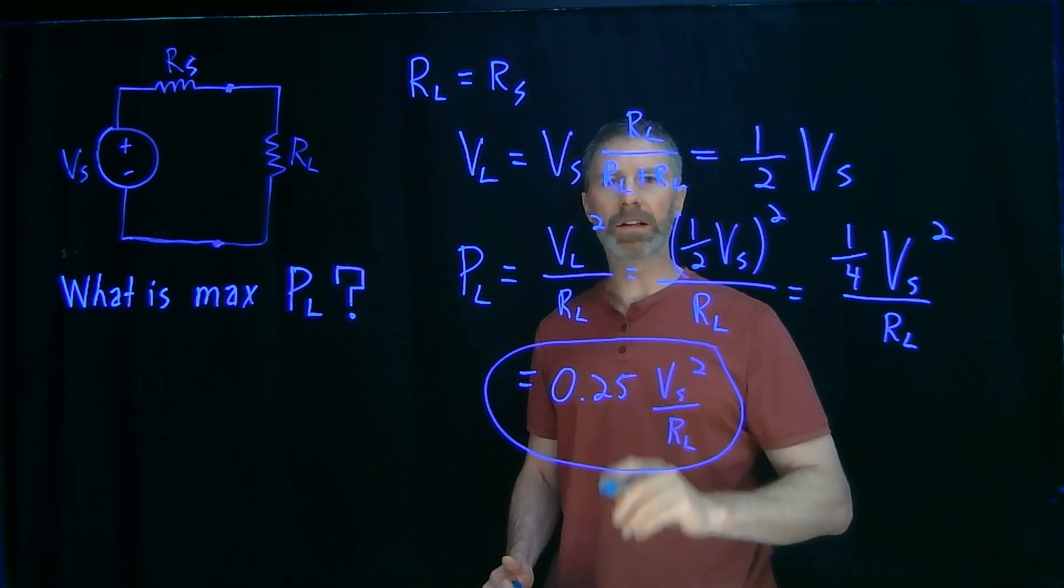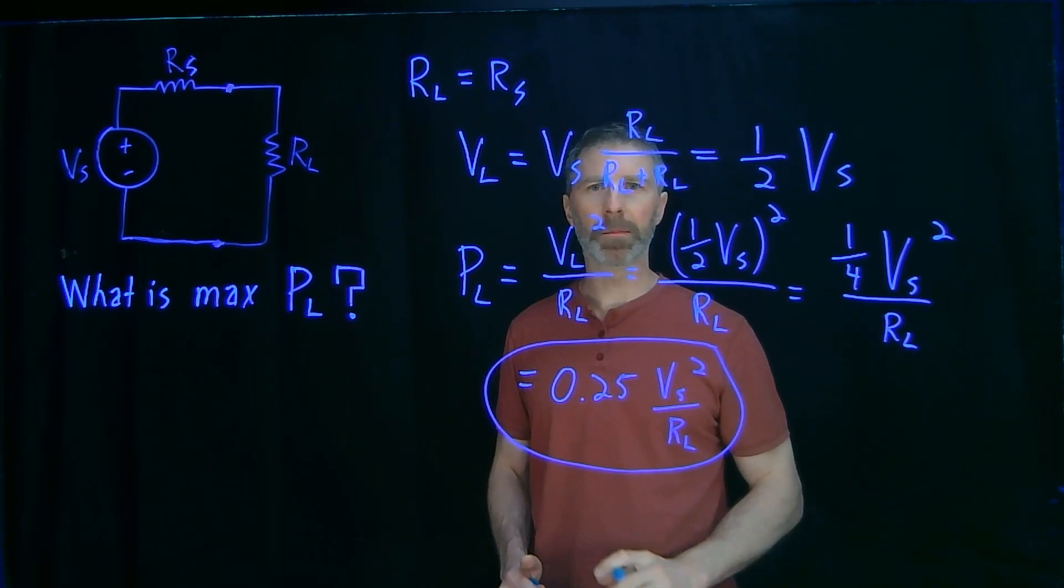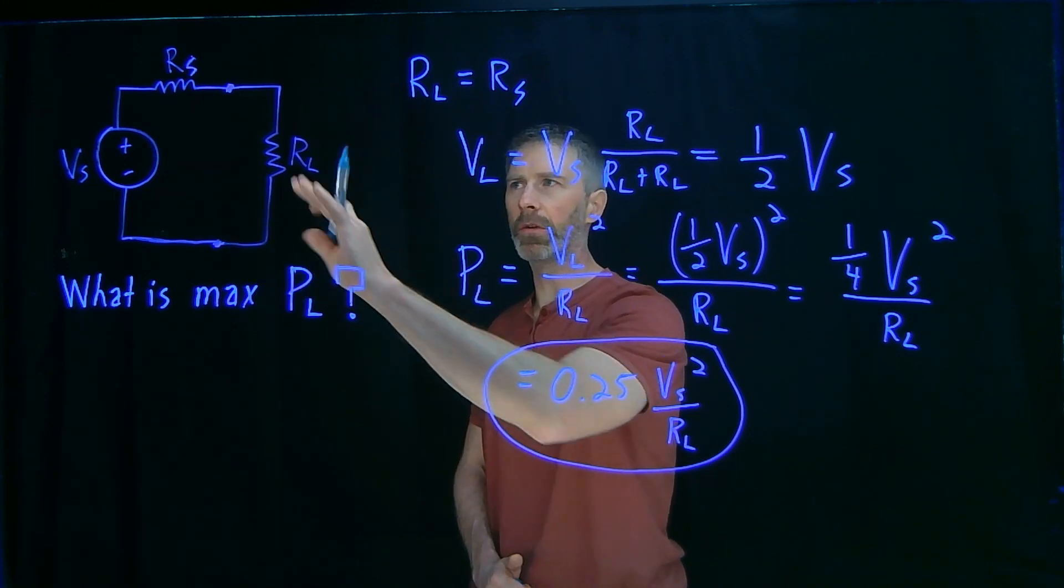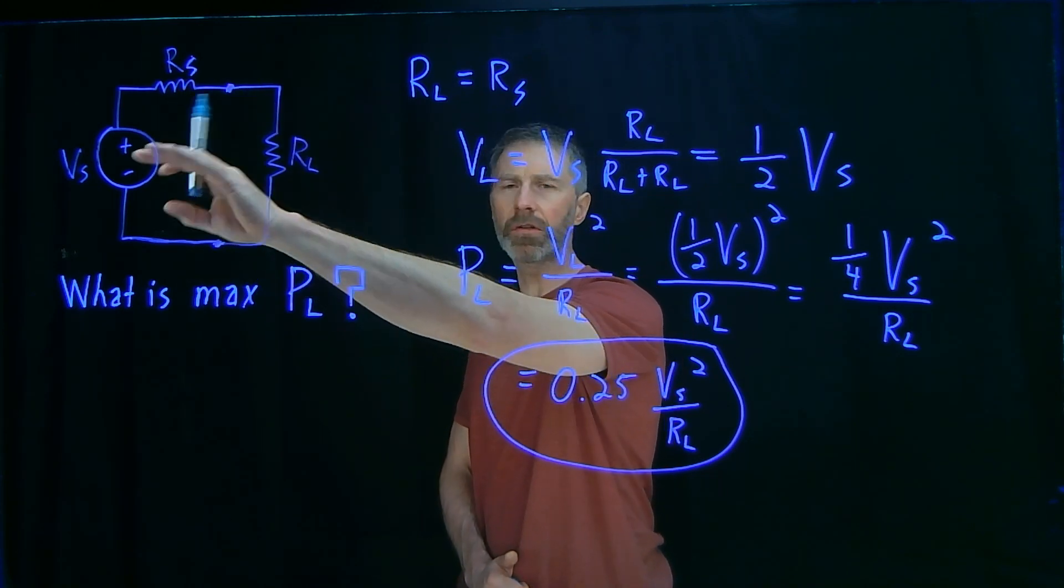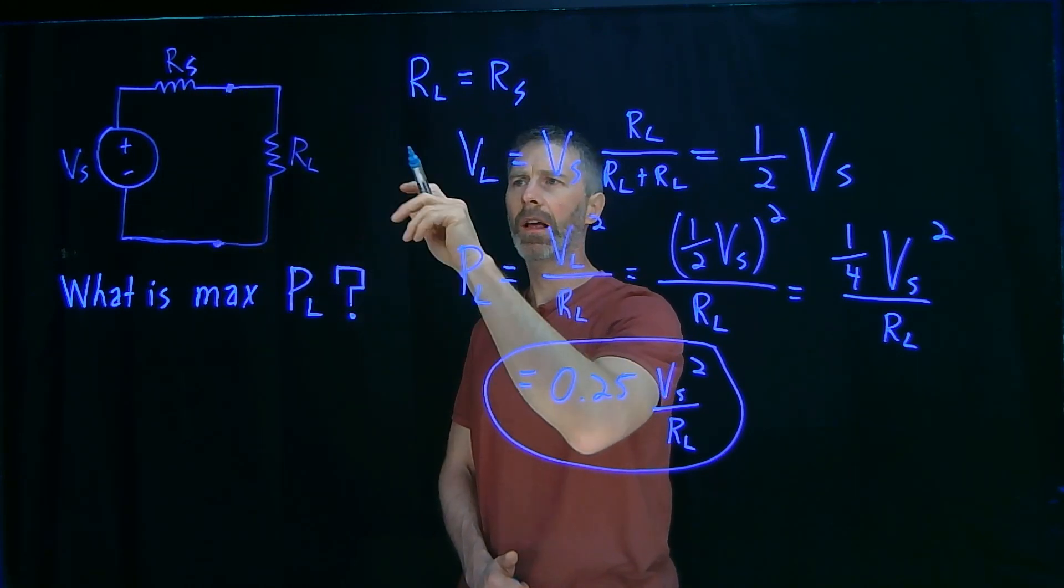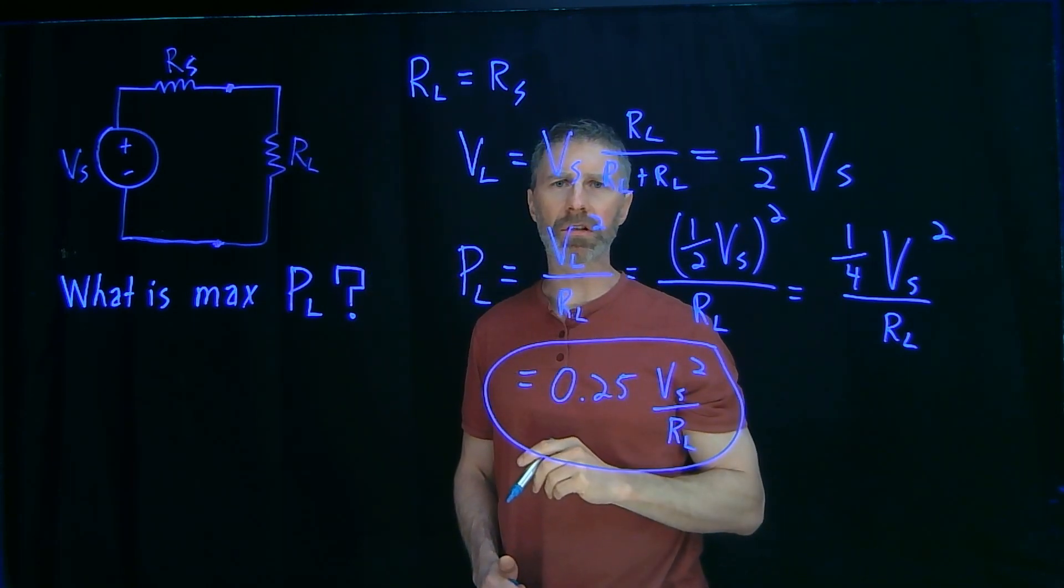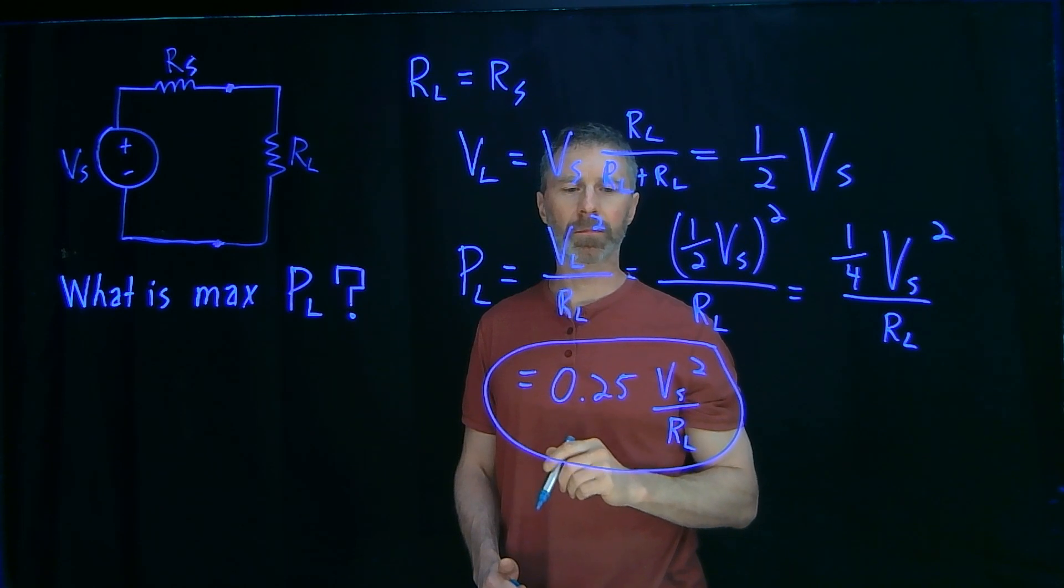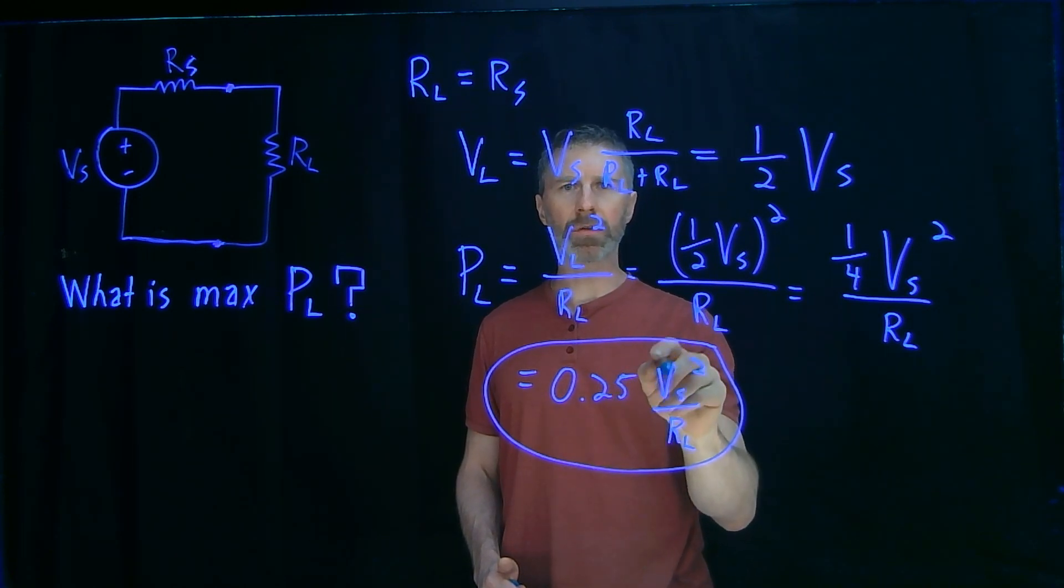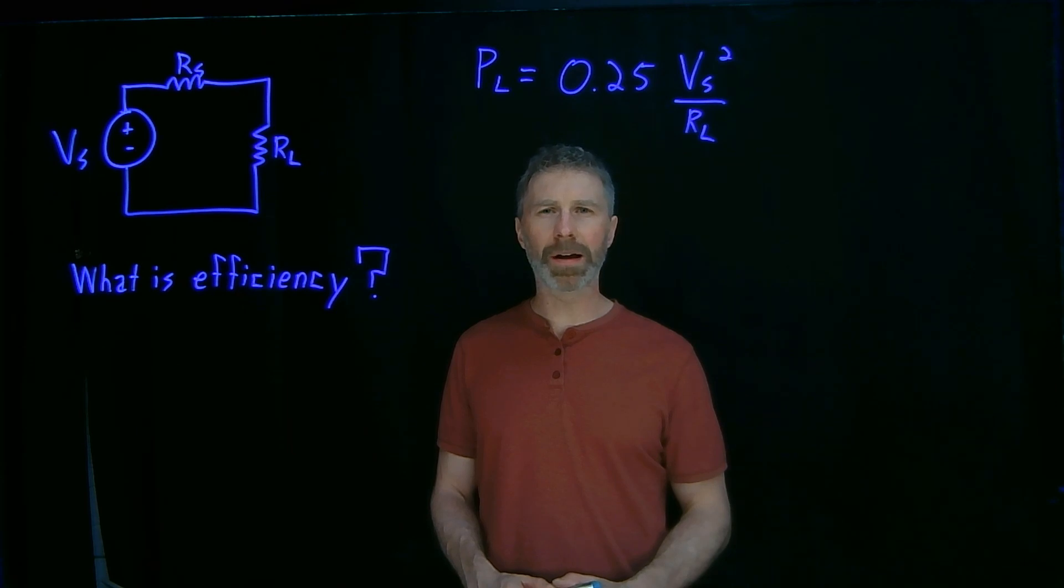So that is what the maximum power is going to be for any circuit that looks like this, where you have a thevenized equivalent resistance, or just a source with an output resistance, and you're matching the load resistance to the output resistance or the thevenin resistance of your source. It's one-quarter VS squared over RL. So we know the power to the load when we are at the maximum power point.